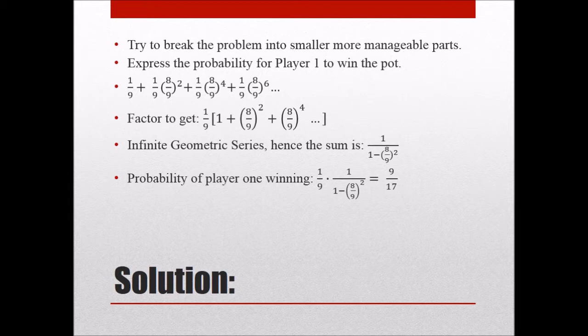So now it should be clear to us that, wait a minute, player one actually has an advantage over player two, but how much of an advantage? So player two has the probability of eight over 17 of winning the game.